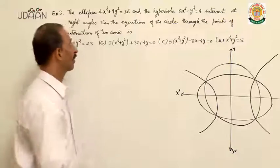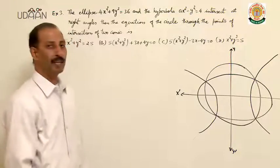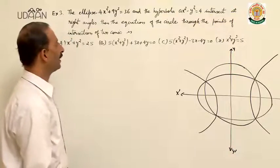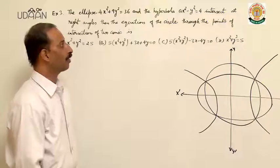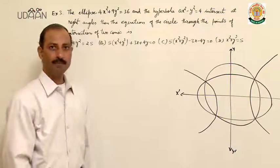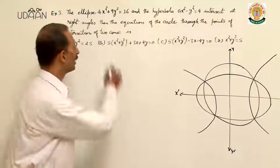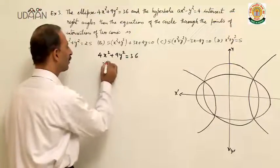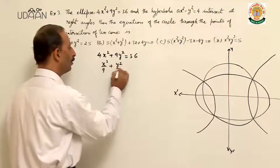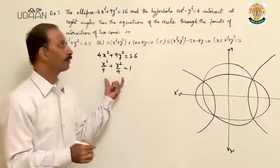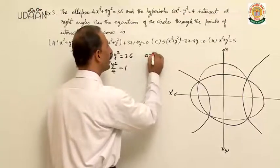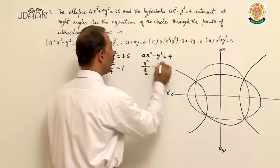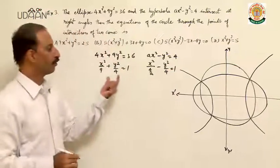In this example, the ellipse whose equation is 4x square plus 9y square equal to 36, and the hyperbola Ax square minus y square equal to 4, intersect at right angle. Find the equation of the circle through the points of intersection of the two conics. Convert ellipse to standard form: divide by 36 to get x square upon 9 plus y square upon 4 equal to 1. Similarly convert hyperbola: x square upon 4 upon A minus y square upon 4 equal to 1.